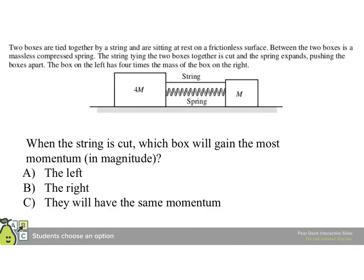Two boxes are tied together by a string and are sitting at rest on a frictionless surface. Between the two boxes is a massless compressed spring. The string tying the boxes together is cut and the spring expands, pushing the boxes apart. The box on the left has four times the mass of the box on the right, and our system will be pretty logically both boxes and the spring. When the string is cut, which box gains the most momentum?